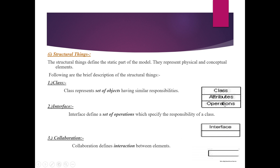The third structural thing is collaboration, which is used to collaborate elements. The collaboration takes place with the help of interaction, and an interaction diagram is used for this purpose. This type of diagram is used for representing any software system design.